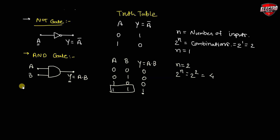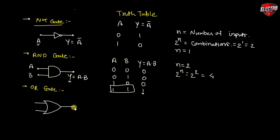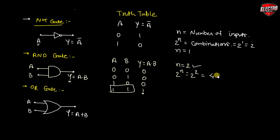Next one is the OR gate. The symbol for the OR gate is given like this. Inputs are A and B, and the OR gate performs the operation A plus B. We have two inputs again, so the number of combinations is four.